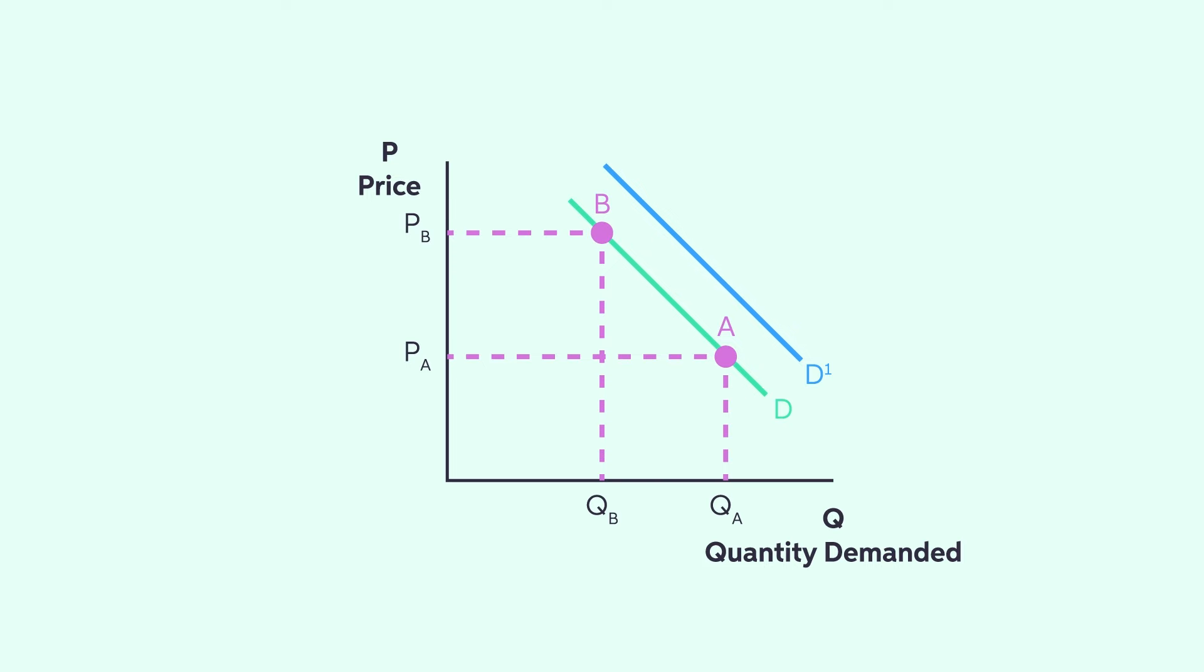If, however, we have a decrease in consumer preference, then the demand curve would shift to the left from D to D2. In general, the demand curve shows the relationship between price and quantity demanded while holding all other demand determinants constant. If any of these other demand determinants change, then the demand curve shifts.